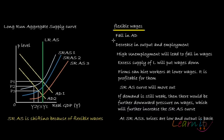Suppose the short-run aggregate supply curve is given by SRAS1 and the aggregate demand curve is given by AD1. Suppose aggregate demand falls from AD1 to AD2. It will lead to a fall in output, and output will decrease as employment falls. Output falls to Y2. At Y2, there is a high level of unemployment, which will lead to a fall in wages.